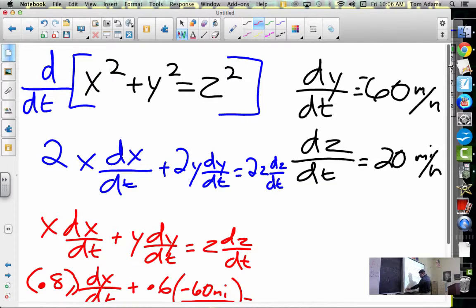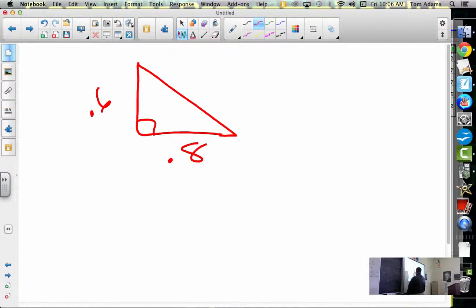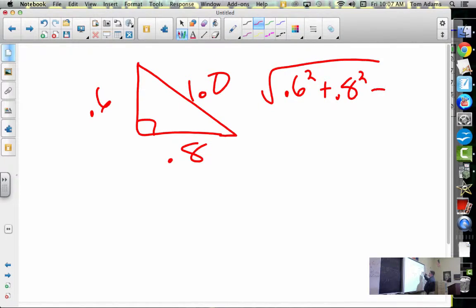So if I go back here, let me go to a different page so I have a little room. We've got a scenario like this where this is 0.6, this is 0.8. I would guess that, what is that, 3, 4, 5 times 2, so this would be probably 1.0 if I had to guess. So where did I get that 1.0 from? Well, I'm going to say 0.6 squared plus 0.8 squared, and then I take the square root of it, should equal my hypotenuse C, or Z in this case.